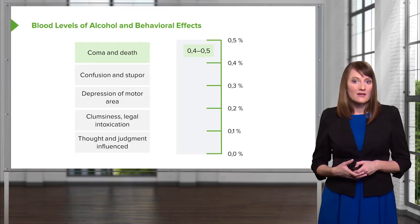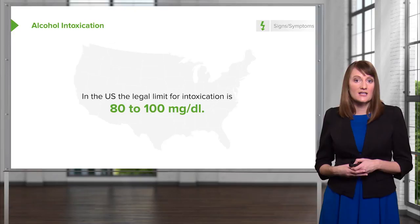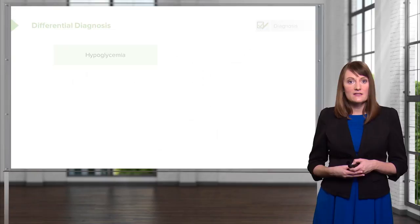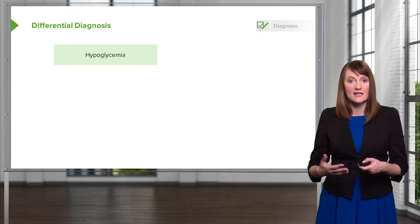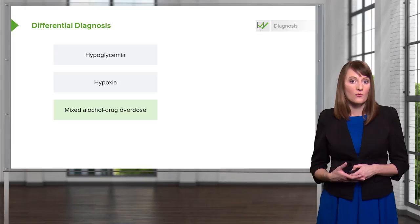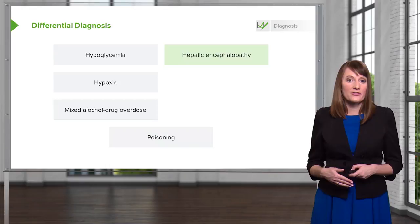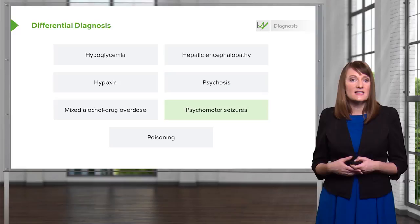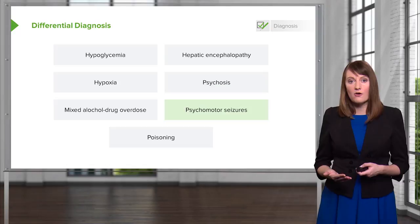In the United States, the legal limit for intoxication is 80 to 100 milligrams per deciliter. The differential diagnosis when encountering someone who may seem intoxicated should include: hypoglycemia, hypoxia, mixed alcohol or drug overdose, poisoning, hepatic encephalopathy, psychosis, and psychomotor seizures. These are all things you want to rule out when encountering a patient who seemingly is intoxicated.